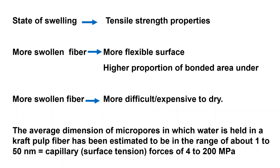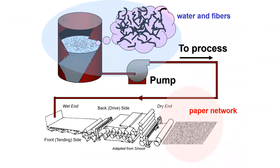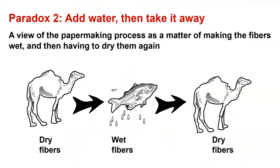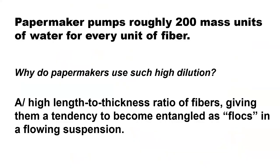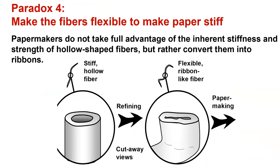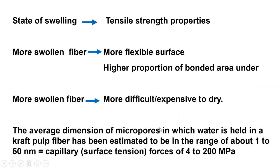The more swollen the fibers, the more refined they are, but also the more difficult it is to remove water. Going back to the process — you tend to refine fibers to make them fibrillated and more swollen. But that means, according to the CSF discussion, that drainage will be slower. Slower drainage means we need to apply either more cylinders or higher temperatures to dry. This is all a trade-off. Notice that when fibers get closer to each other in the nanoscale range — 50 nanometers or so — you generate forces of several atmospheres. So this is very important.